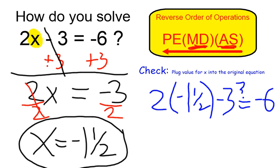I can check to make sure that I'm right by taking that negative 1 and a half and plugging into my original equation and seeing if it is, in fact, true. 2 times negative 1 and a half is going to be negative 3. And negative 3 minus 3 is going to equal negative 6.